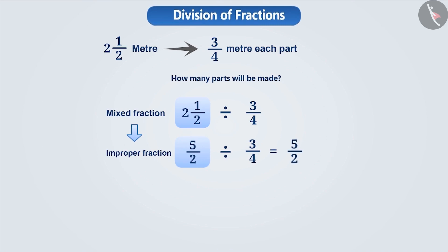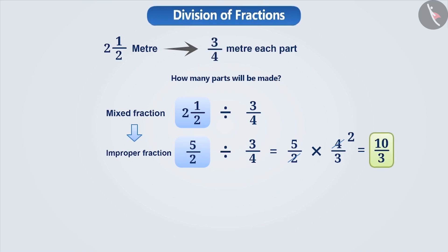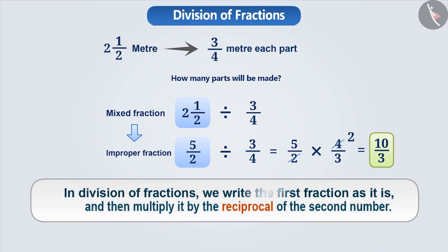We will keep the first fraction as it is, then change the division sign to multiplication sign and write the other fraction as the reciprocal. That means five by two divided by three by four is equal to five by two into four by three, which is ten by three. So from a two-and-a-half metres long ribbon, we will be able to make ten by three pieces, each measuring three-fourth metre. In division of fractions, we keep the first fraction as it is and multiply it with the reciprocal of the second fraction.